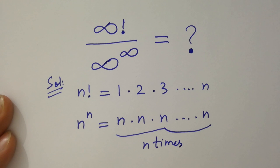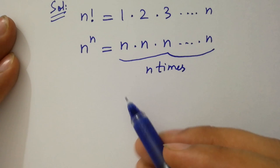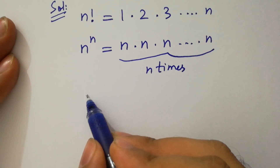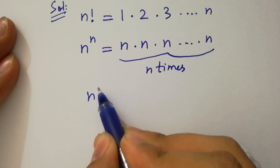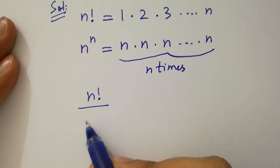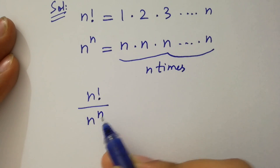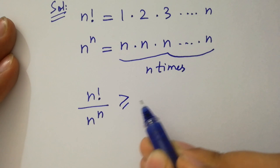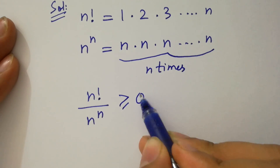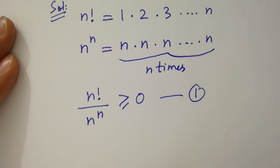Then for any positive n, we have n factorial over n to the power n will be greater than or equal to 0. Let's call this the first equation.